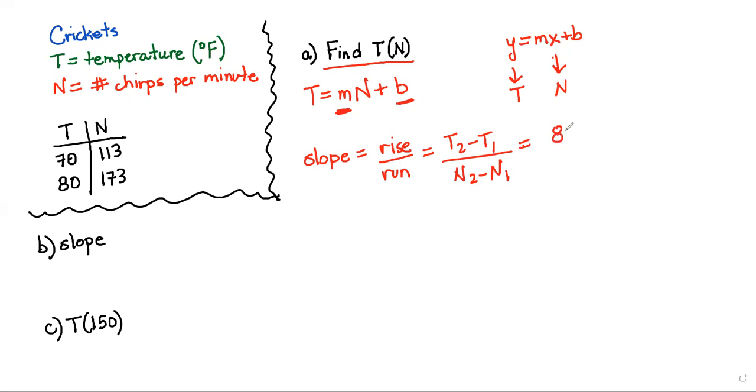All right. Let's use our data. So that will give us 80 minus 70 over 173 minus 113. And there are units, just so we're aware. So the top is degrees F, and the bottom is in chirps per minute. All right. So those are the units. Okay. So we can clean this up a little bit. Our slope then is equal to 10 over 60, and that's in degrees F over chirps per minute. And we can reduce that all the way down to 1/6. So our slope is 1/6 degrees F over chirps per minute.